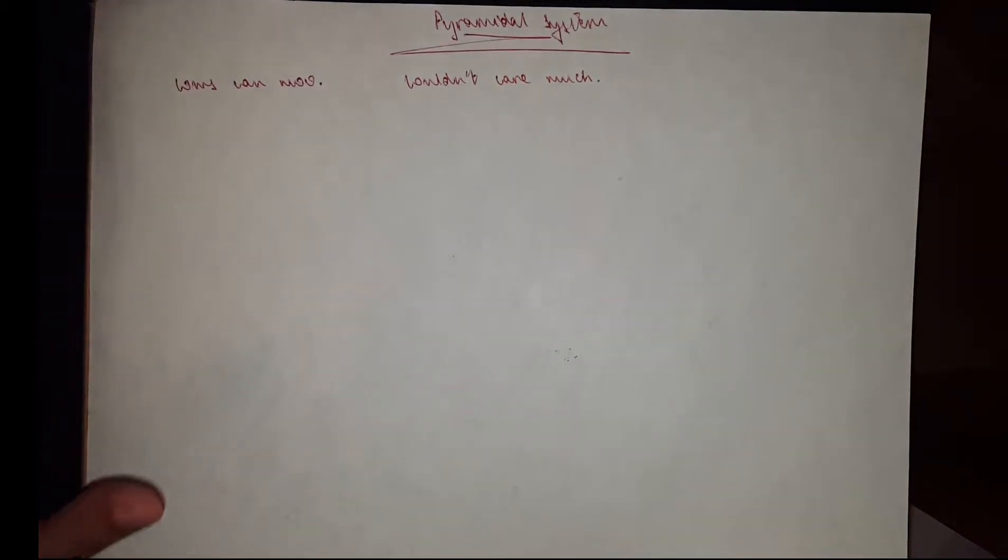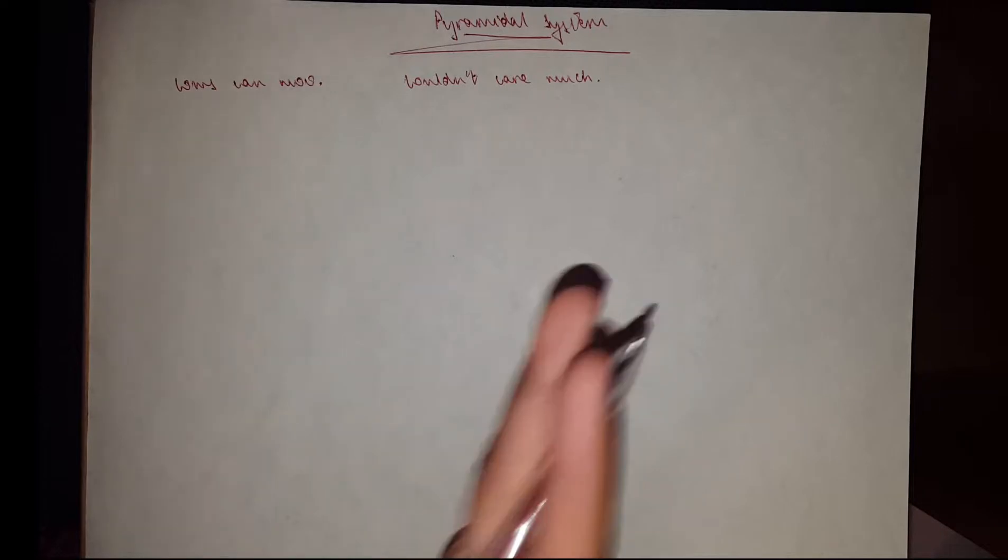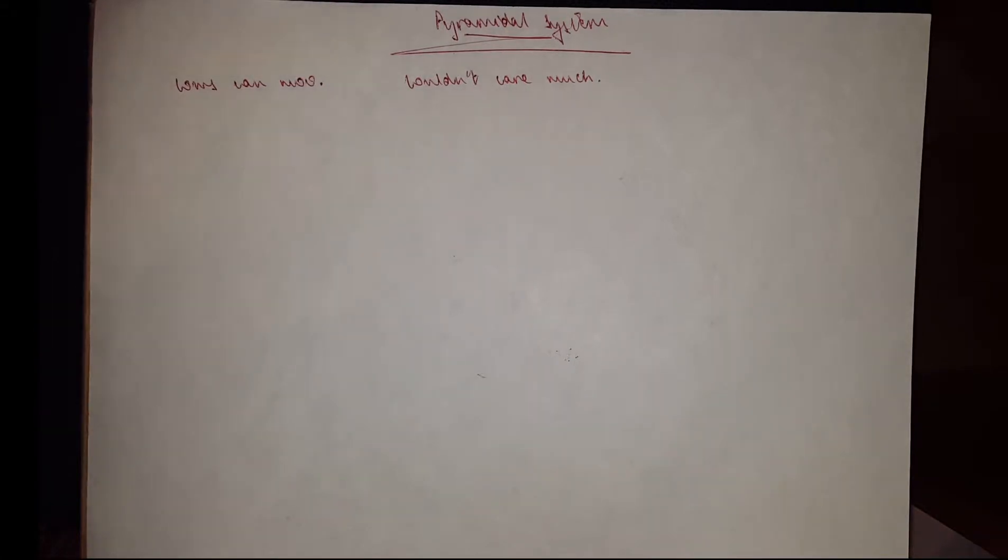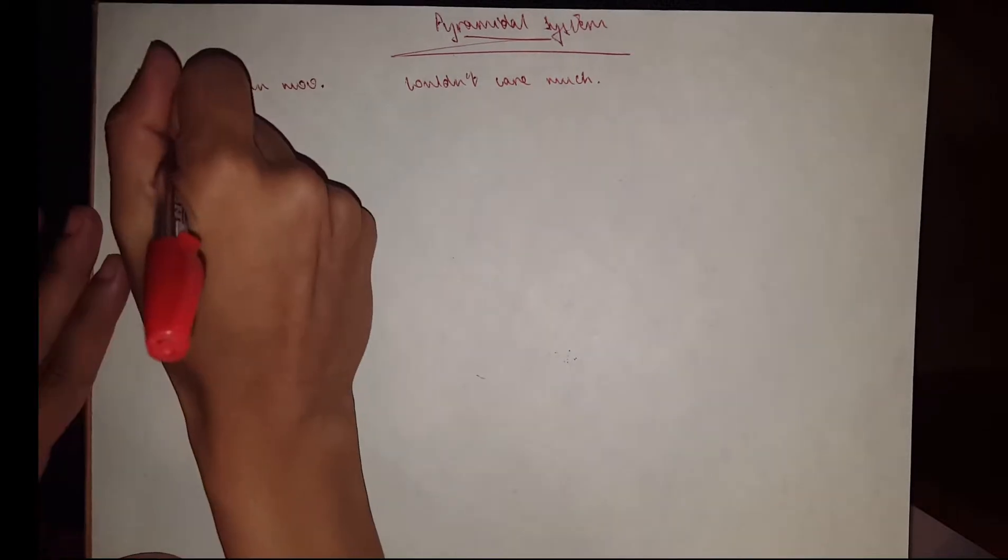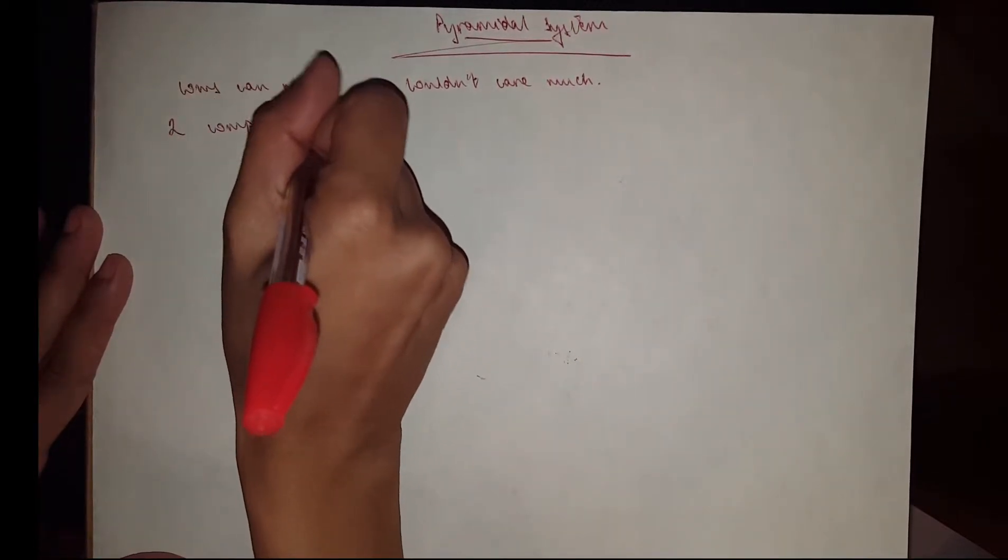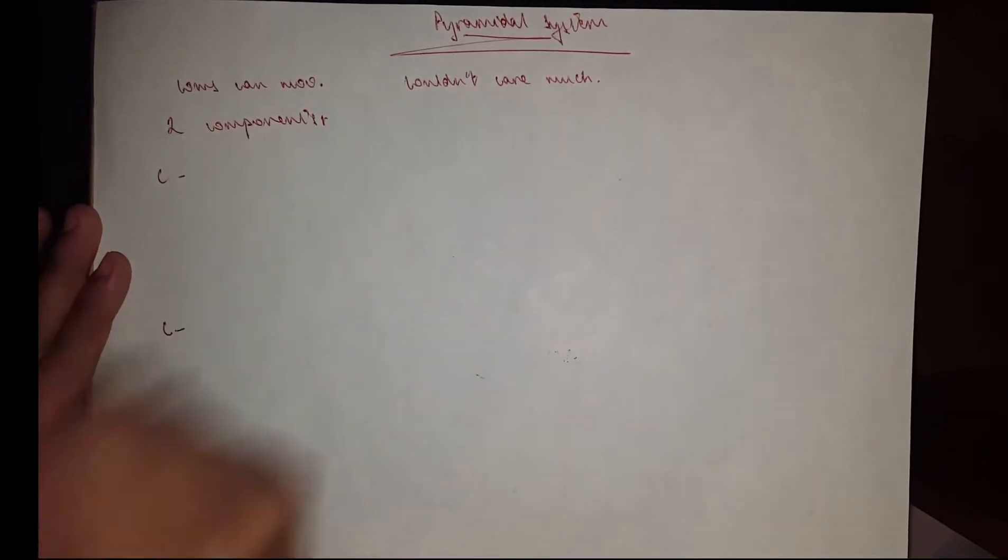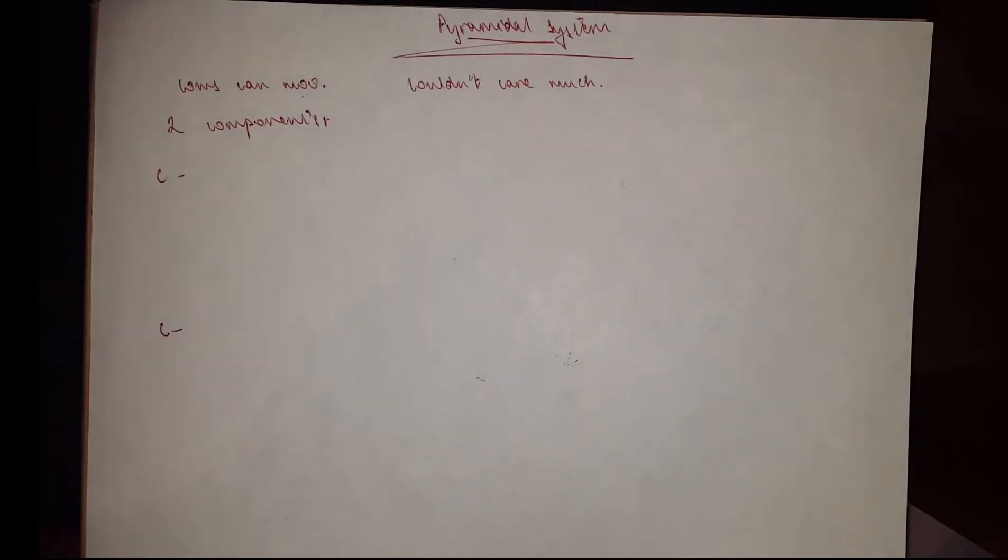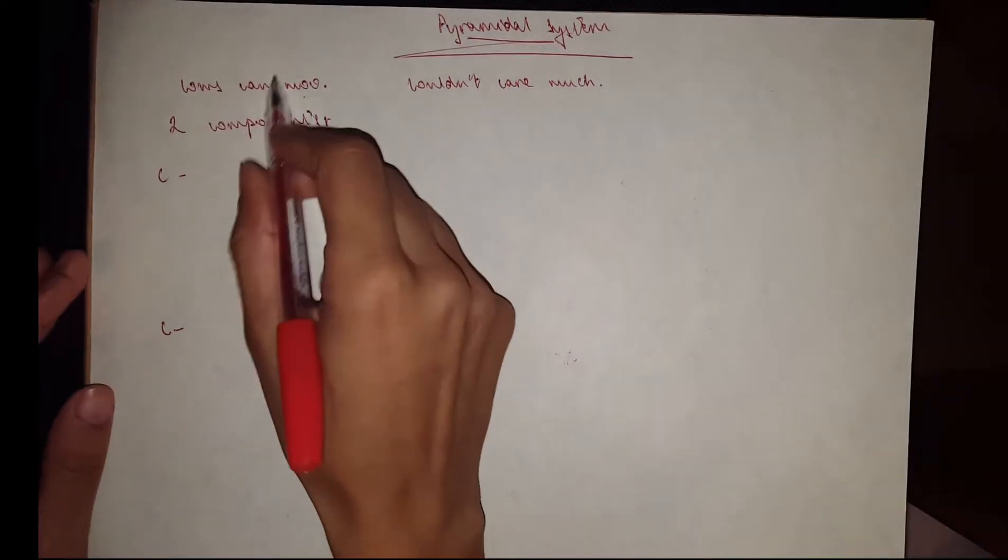So you couldn't care much about this topic, but we have to do it anyway. The pyramidal system is responsible for the execution of highly skilled voluntary movements, which is motor, especially the hand and the face, and it has two components. Now we've got 'cows can,' so one C here and another C over here, and 'moo.' Moo is literally to do with motor, but I'll get back to it later.